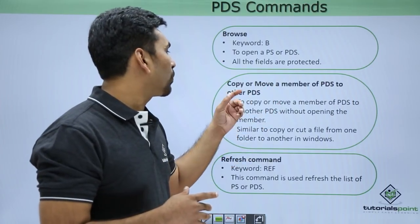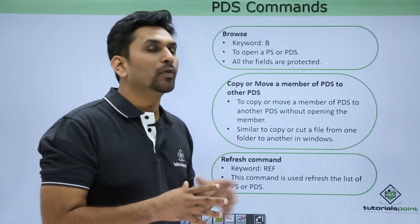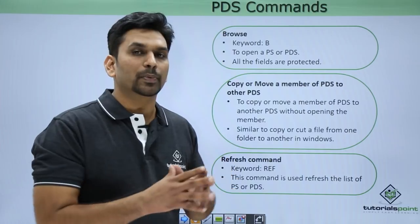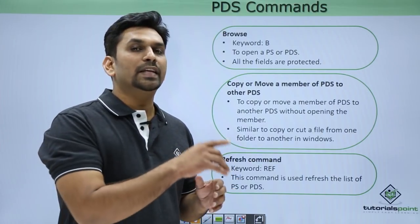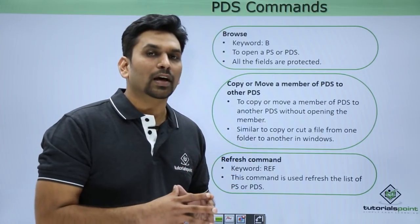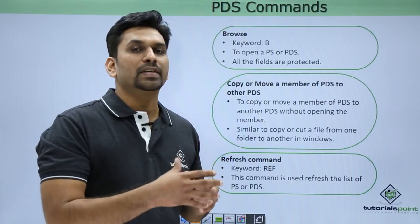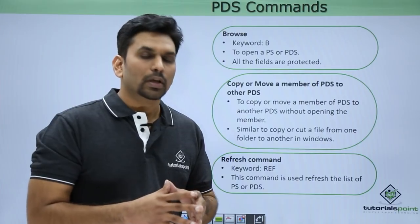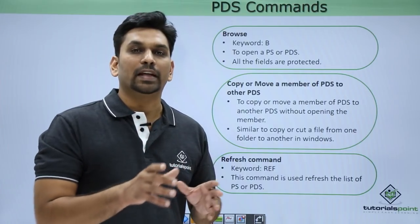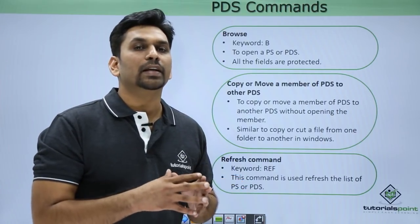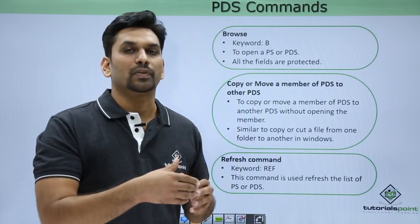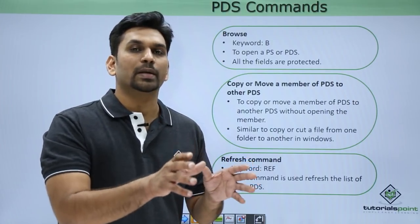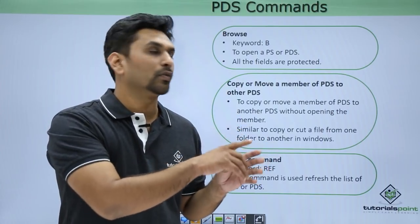Next is copy or moving a member from one PDS to another PDS. If you want to copy one member from one PDS to another PDS, type C in front of it and hit enter. It will ask for the new PDS name. Give the new PDS name in quotes and hit enter — the member will be copied. If that member is already present there, it will ask for a new member name as well. In that scenario, give the new member name and new PDS name and hit enter, but the contents will be copied from the old one.